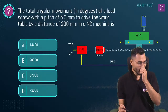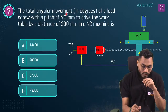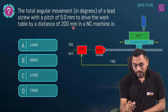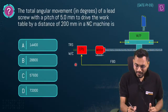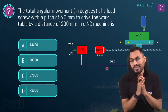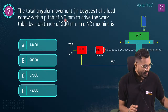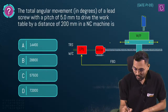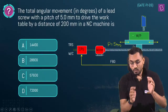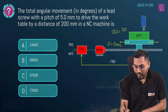The first question: what is the total angular movement in degrees of a lead screw with a pitch of 5 mm to drive the work table by a distance of 200 mm in a CNC machine? A block diagram of the NC/CNC machine is given. The pitch of the lead screw is 5 mm, and we want to travel 200 mm.